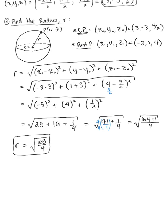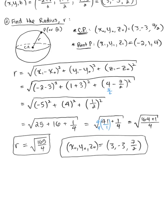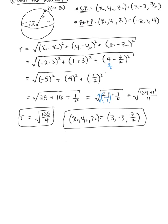We've got our radius length and we have our center point (x₀, y₀, z₀), which we found in the first part. That point was 3, negative 3, 7/2. Now we can take these two values and substitute them into the general equation for our sphere.